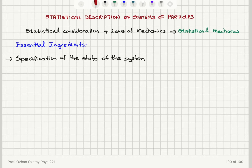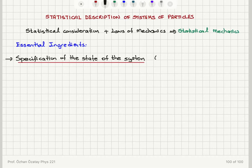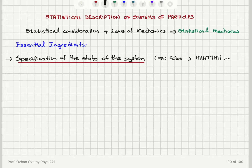What do we mean by that? For example, if we are tossing a set of coins, we give the state as: head, head, head, tail, tail, head, head, etc. So this sequence defines a state of the system.